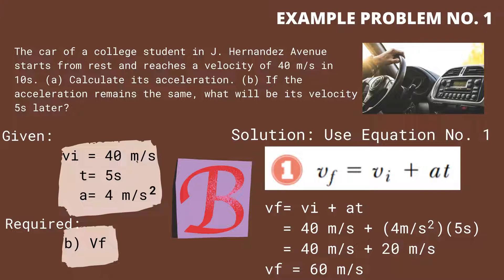v sub f equals 40 meters per second plus the product of 4 meters per second squared and 5 seconds. That equals 40 meters per second plus 20 meters per second. Therefore, v sub f equals 60 meters per second.